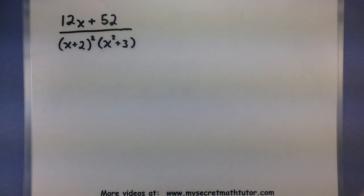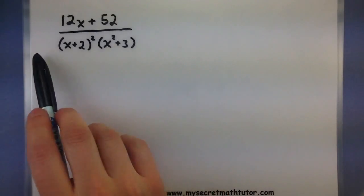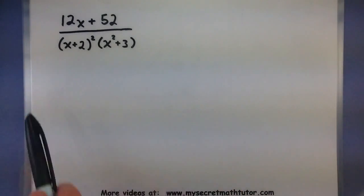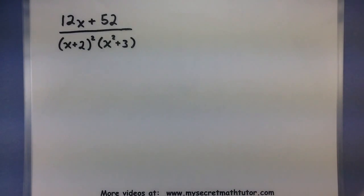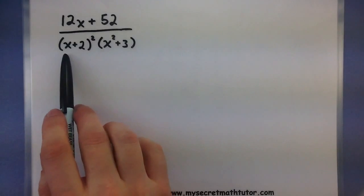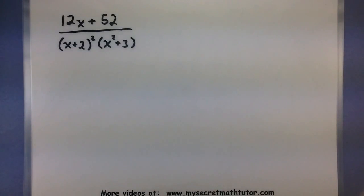Okay, now in step two, I want to completely factor the bottom. Now this one's already been set up, the bottom is already completely factored. That means, essentially from here, I just have to work on setting up my new fractions. And we're going to set up our new fractions using these factors in our denominators. So let's look exactly how we do that.